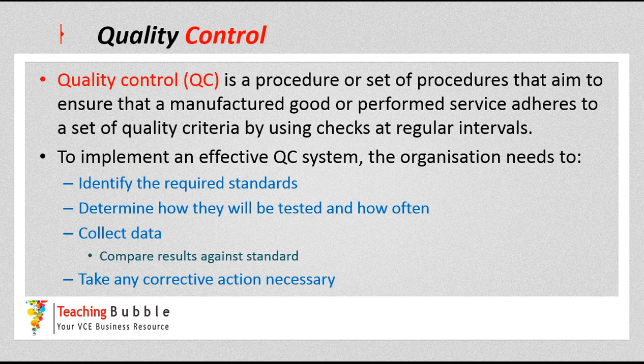To implement an effective quality control system, there are four main steps. First, identify the required standards — what standard are they aiming for — and then determine how and how often it will be tested. Next, collect data and compare the results against the standard to see if there are any discrepancies. If there is a discrepancy in quality, they need to take corrective action wherever necessary.